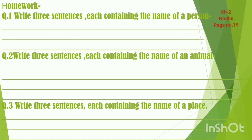Question three: write three sentences, each containing the name of a place. Teen sentences likhane hain jis mein place ka naam aata ho. For example: 'I go to school every day' — school is the name of a place. Or: 'I went to the zoo yesterday' — zoo is the name of a place. You can write down three examples for each one of the following.